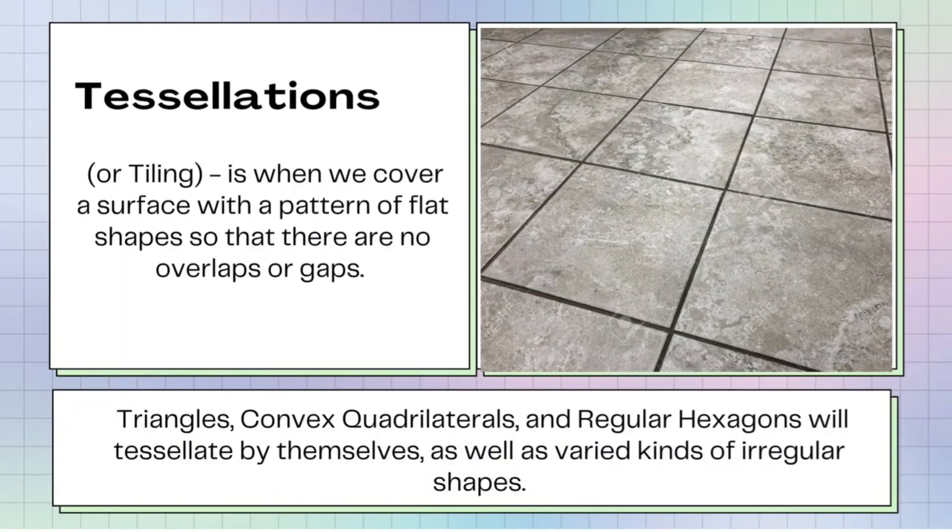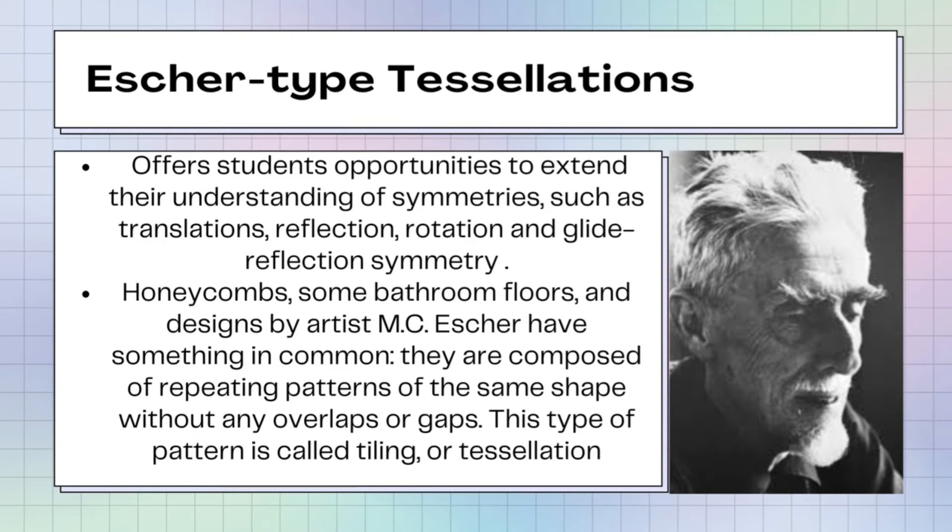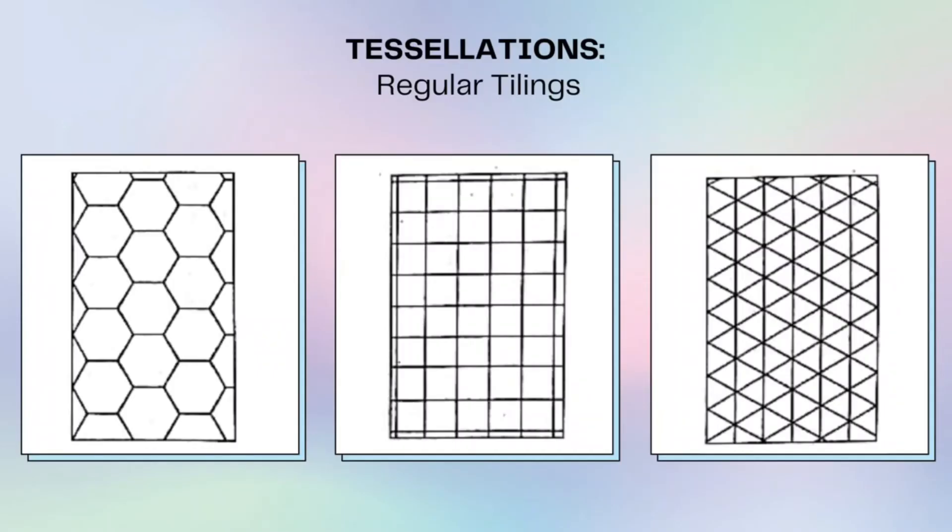Now let us move to another topic which is learning about tessellations. What is tessellations? Tessellations or tiling is when we cover a surface with a pattern of flat shapes so that there are no overlaps or gaps. Triangles, convex quadrilaterals, and regular hexagons will tessellate by themselves as well as varied kinds of irregular shapes. Escher-type tessellations offer students opportunities to extend their understanding of symmetries such as translations, reflection, rotation, and glide reflection symmetry. Honeycombs, some bedroom floors, and designs by artist M.C. Escher have something in common. They are composed of repeating patterns of the same shape without any overlaps or gaps.